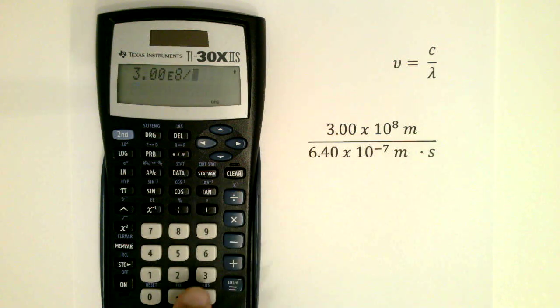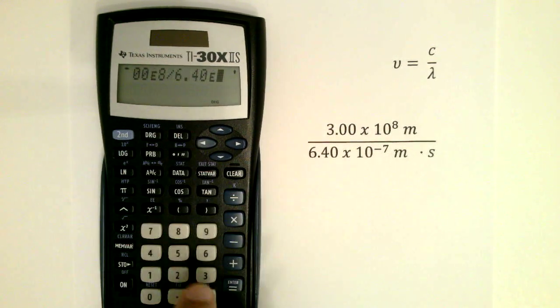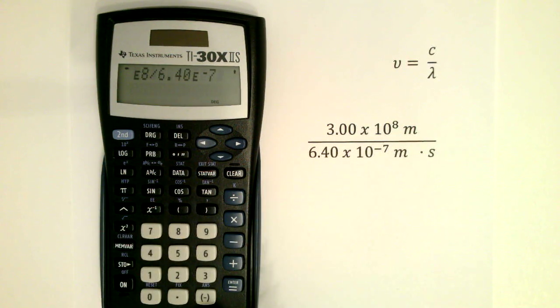I'll then divide by 6.40 times 10 raised to the negative 7. Make sure you use the negative key and not the minus key.